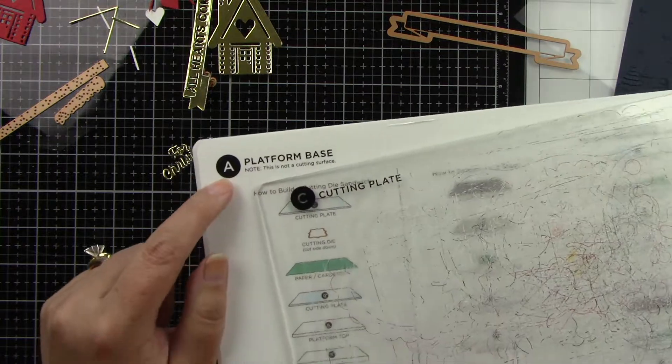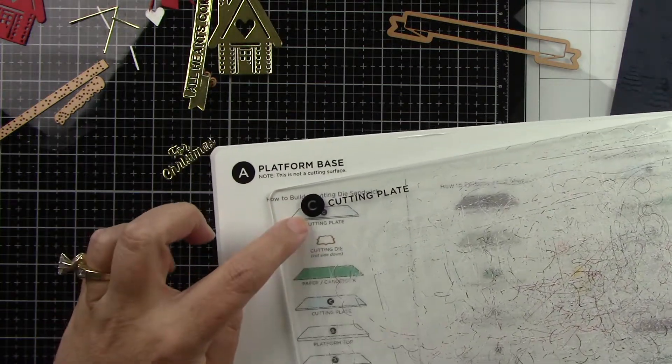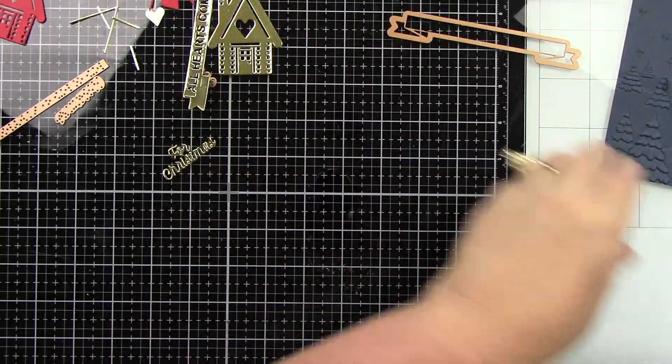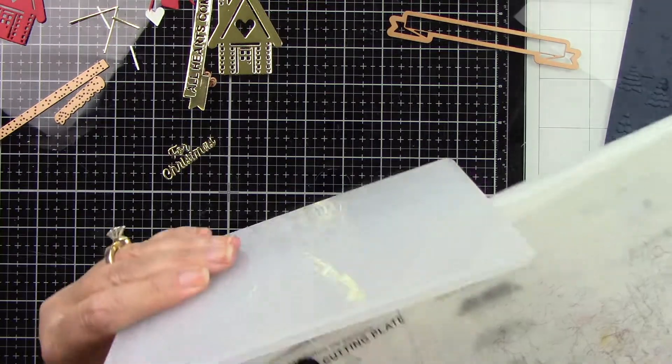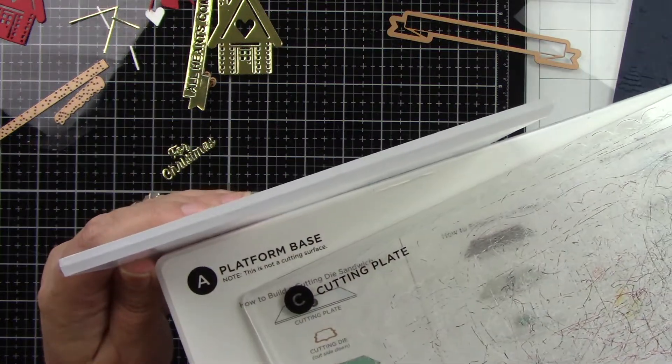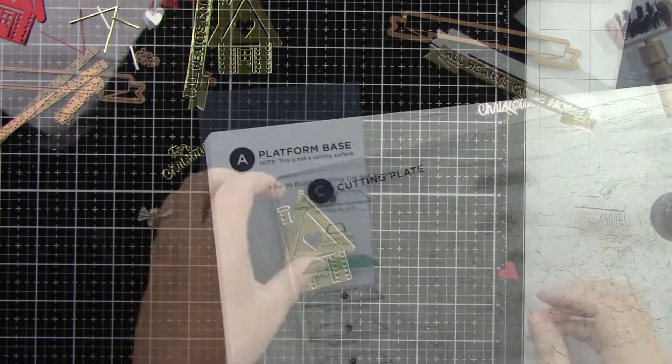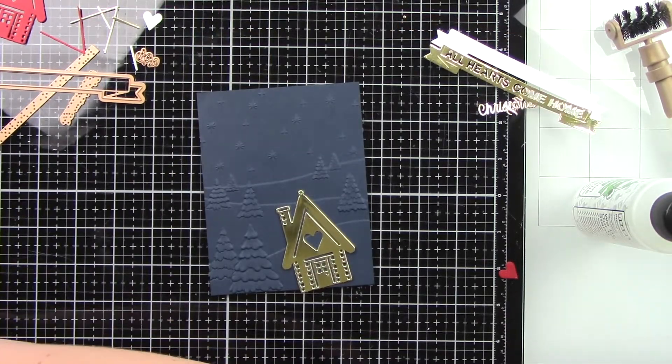Now here is my sandwich. I'm using the platform A and C of the Universal Plates from Spellbinders. Look at how thick that embossing folder is. That will be listed and linked for you guys below.